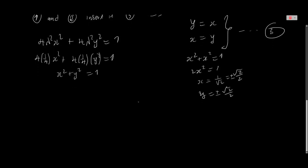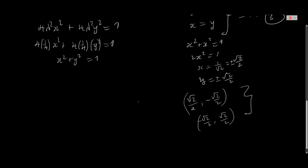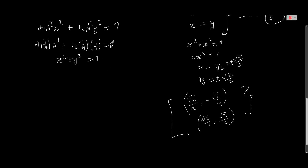Therefore our critical points given the constraint are: (√2/2, √2/2), (−√2/2, −√2/2), (√2/2, −√2/2), and (−√2/2, √2/2). Those are the critical points. That's it for this video — see you guys in the next one.